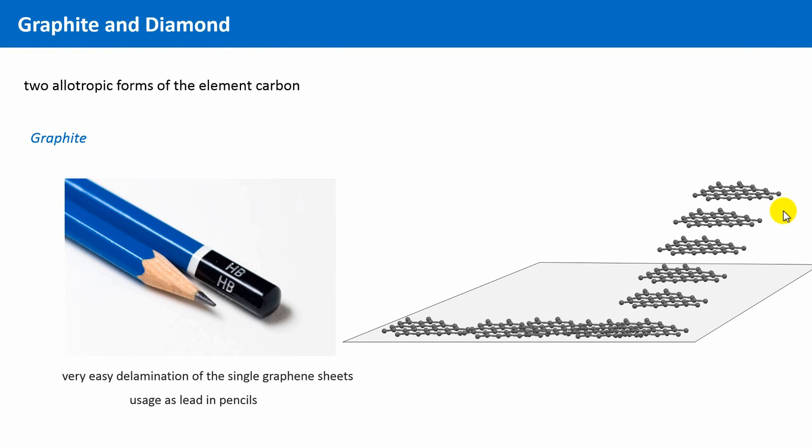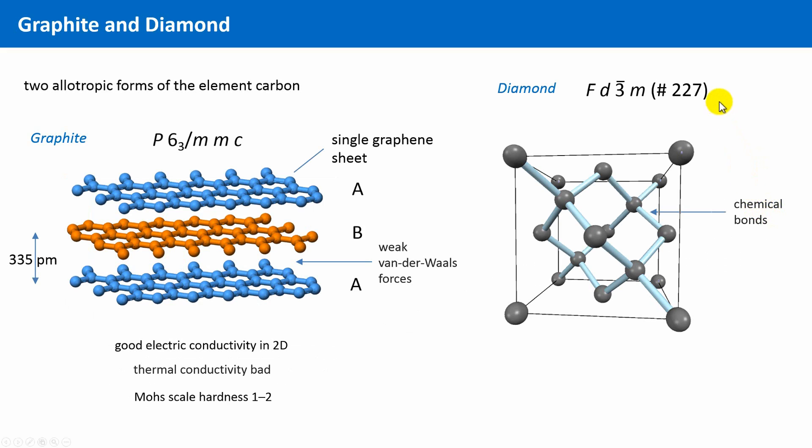Now let's compare graphite with a girl's best friend, diamond. Here you see one unit cell of diamond. The space group is Fd3 bar m, cubic.